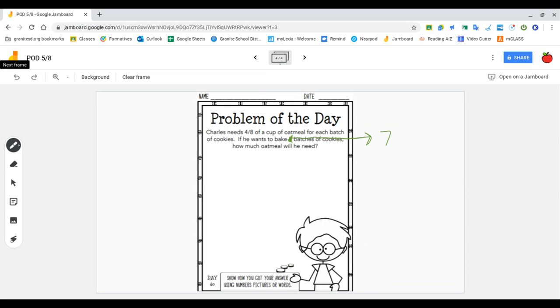Charles needs four-eighths of a cup of oatmeal for each batch of cookies. If he wants to bake seven batches of cookies, how much oatmeal will he need?